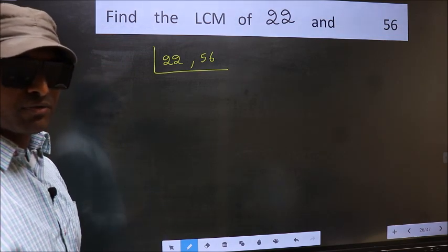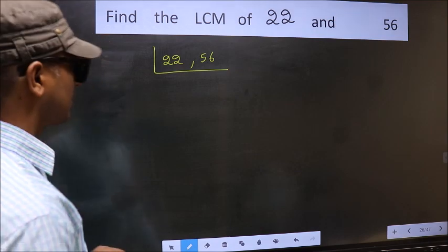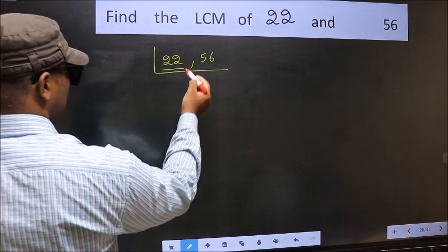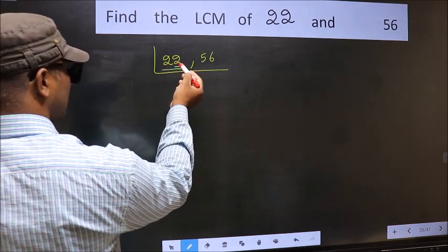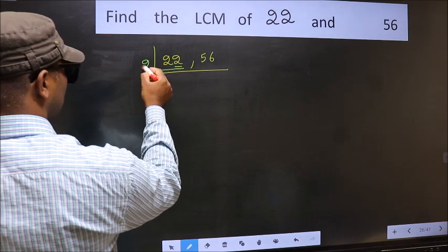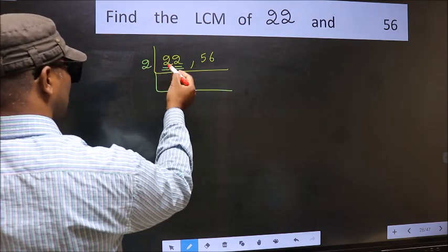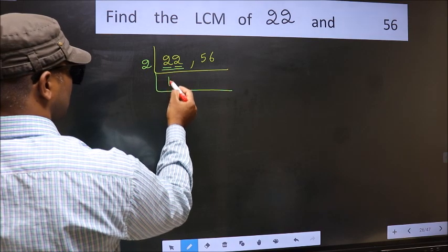Now you should focus on the first number which is 22 here. For this number, last digit 2, even, so take 2. First number 2, when do we get 2 in 2 table? 2 times 1 is 2.